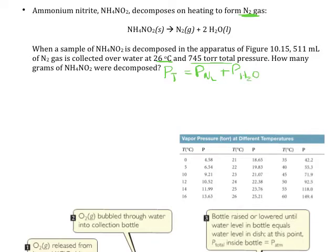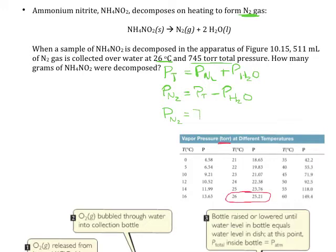Using this chart from the back of the book, we can see that at 26 degrees C, the vapor pressure of the water is 25.21 torr. So if I rearrange this equation to solve for the partial pressure of the nitrogen, the partial pressure of nitrogen equals the total pressure minus the partial pressure of the water. Since my total was 745 torr, I subtract the 25.21 torr and get a partial pressure of just the nitrogen of 719.79 torr.